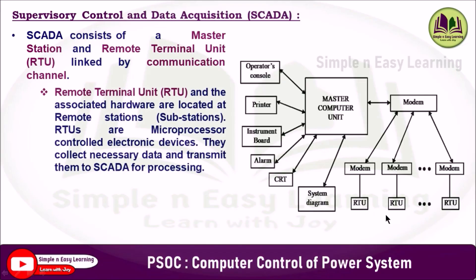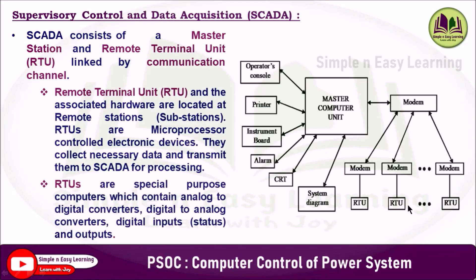The remote terminal unit and the associated hardware are located at remote stations, generally in substations. These RTUs are microprocessor-controlled electronic devices that collect necessary data with the help of sensors and transmit them to SCADA for processing. RTUs are special-purpose computers which contain analog-to-digital converters, digital-to-analog converters, and digital input and output status.